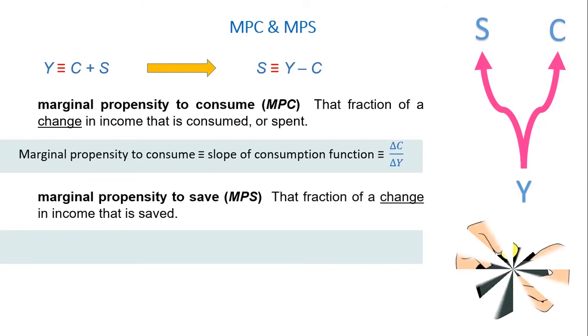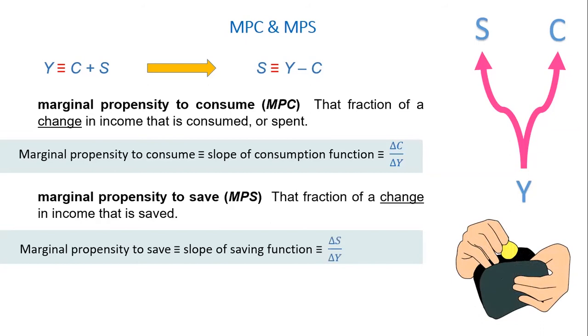Now, the marginal propensity to save MPS is that fraction of a change in income that is saved. It's the slope of the saving function, delta S over delta Y. If we have the same example, if we consumed 80, it means we saved 20. So the marginal propensity to save MPS in this case is 20 over 100, which is 0.2.